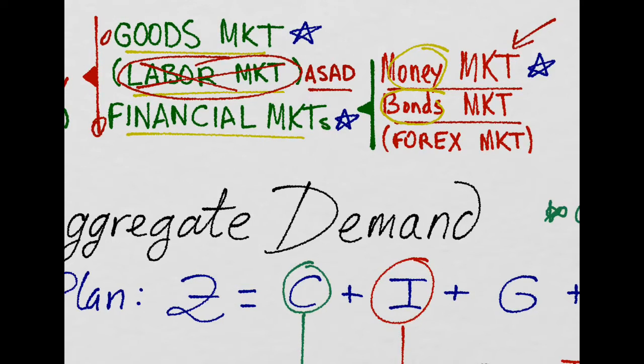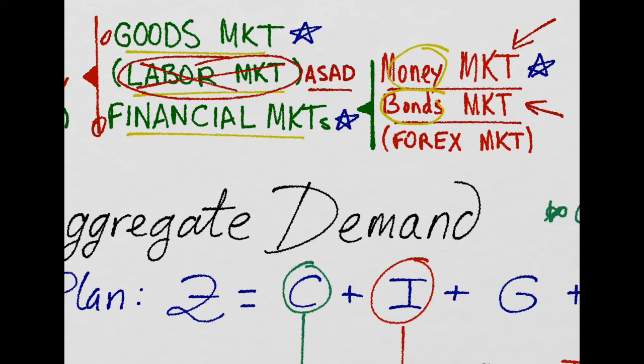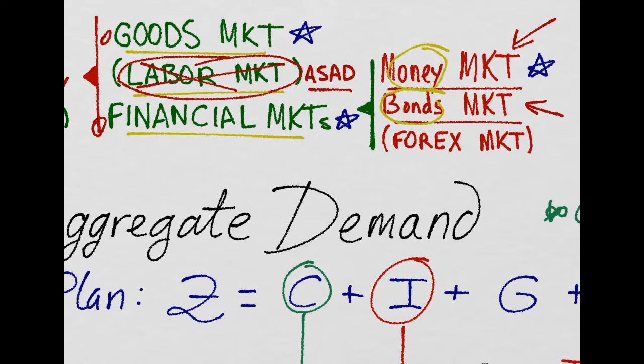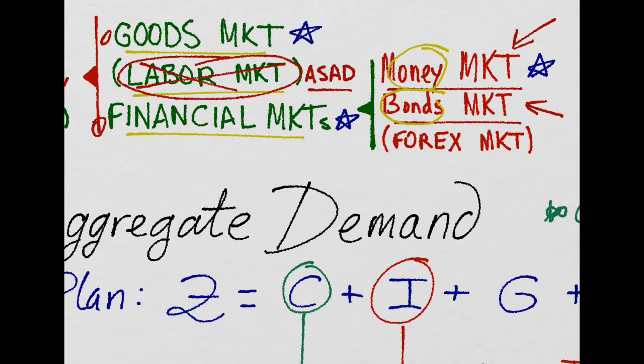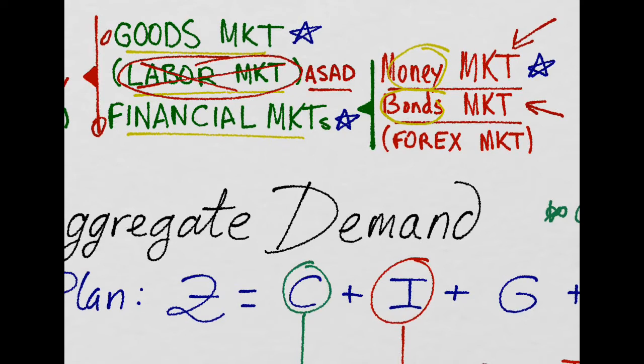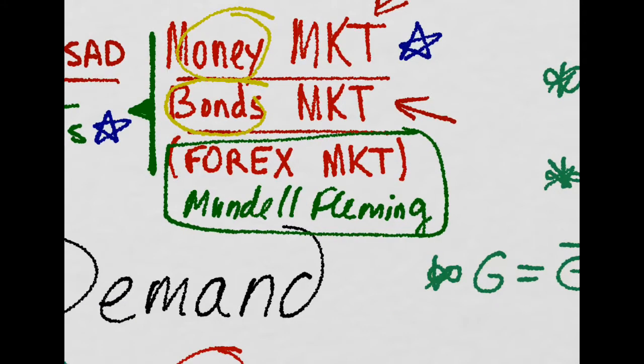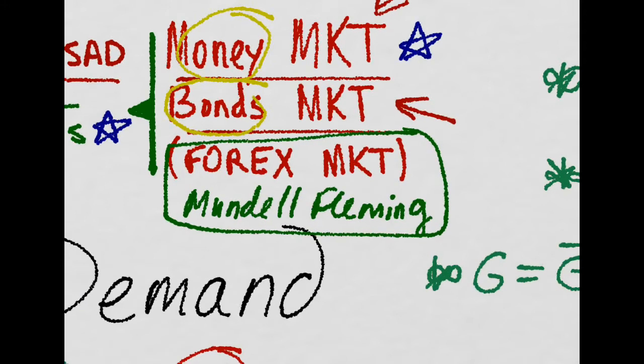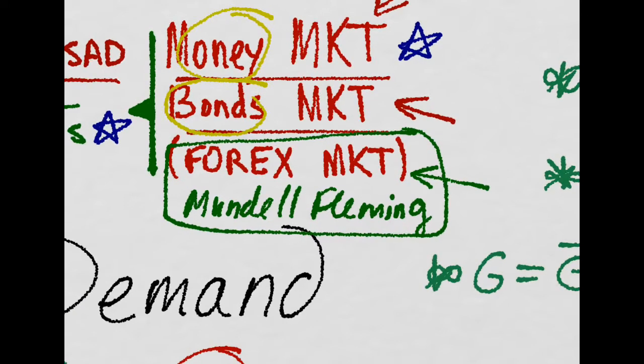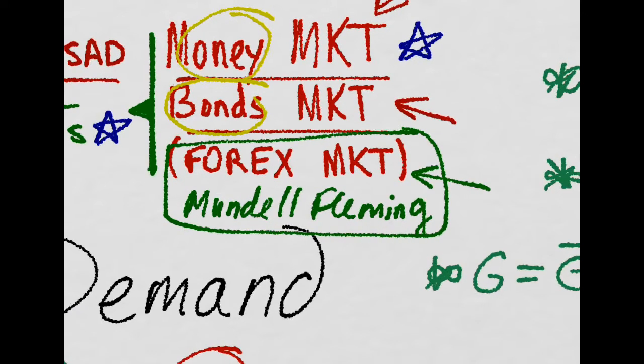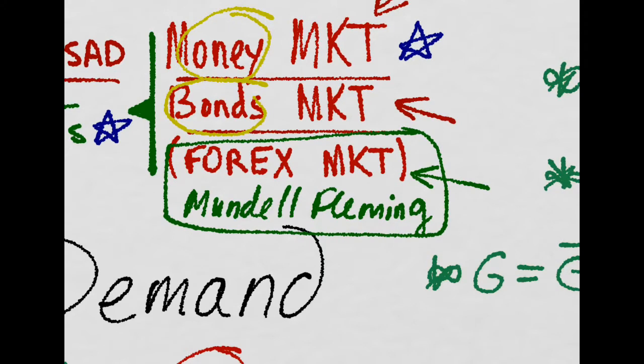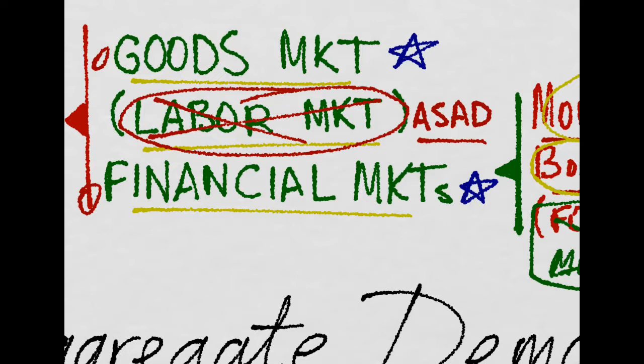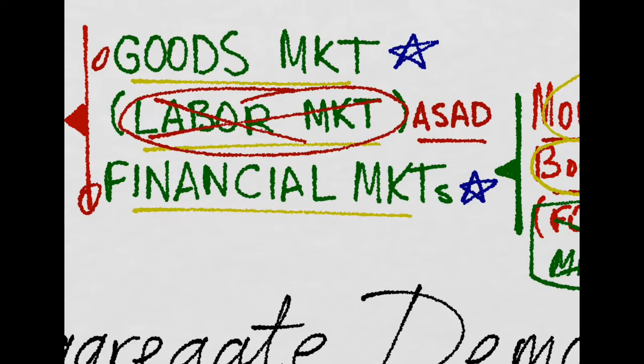The bonds market will be implied in the model. It won't be until we talk about the Mundell-Fleming model with exchange rate mechanisms and regimes that we will introduce the foreign exchange market, the forex market, to develop our open economy IS-LM model. But right now, it won't be here. So let's start now with the goods market.